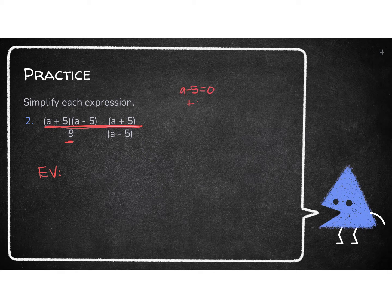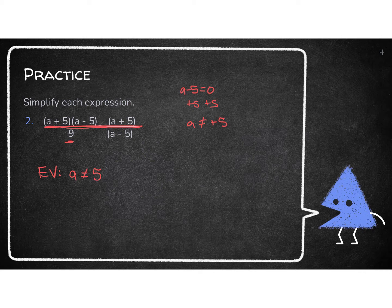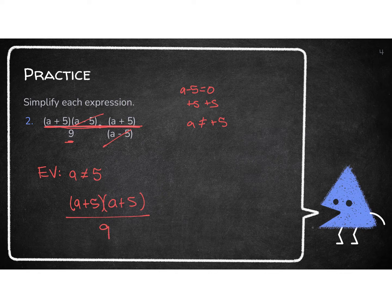I'm going to set A minus 5 equal to 0 and solve for A. So I know A cannot equal positive 5. Now I'm going to simplify. Factors that are the same on top as they are on bottom, I can cross off. I have A minus 5 on the top with A minus 5 on the bottom. Notice I have two A plus 5s, but they're both on top, so I cannot cross them off — I'll leave both on top. That gives me A plus 5 squared all over 9. Those are the two parts of my answer.